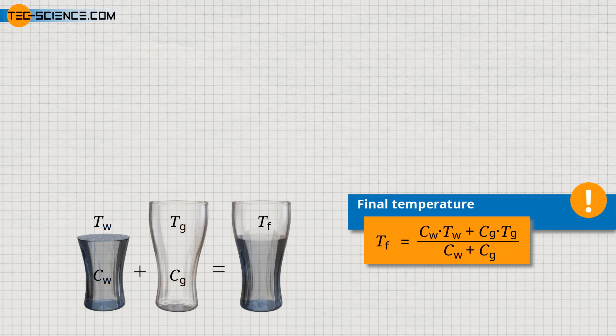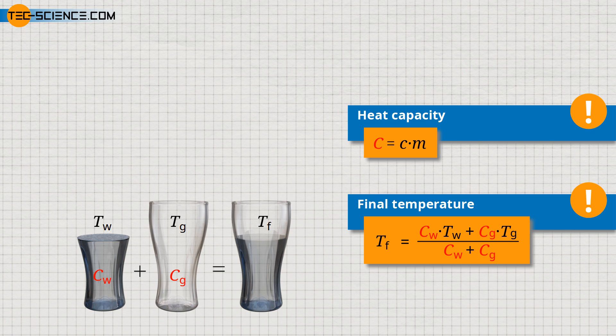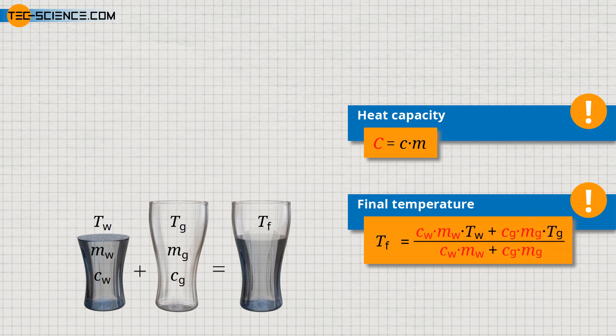When looking at this equation, the question arises as to how the given heat capacities can be determined. The heat capacity of a homogeneous object can be calculated using the specific heat capacity as a substance-dependent quantity. In contrast to the absolute heat capacity of an object, denoted by the capital letter C, the specific heat capacity, denoted by the lowercase letter c, indicates the heat capacity of a substance per kilogram of mass. The heat capacity of an object is thus obtained by multiplying the specific heat capacity by the mass of the object. Using this relationship, the final temperature can also be determined on the basis of the specific heat capacities and the masses of the objects involved.